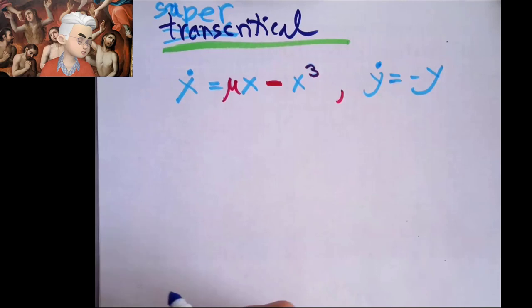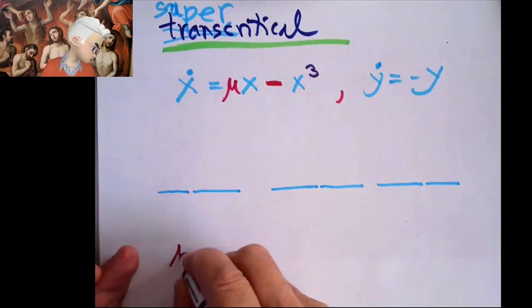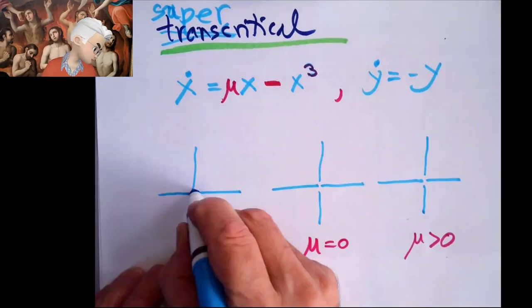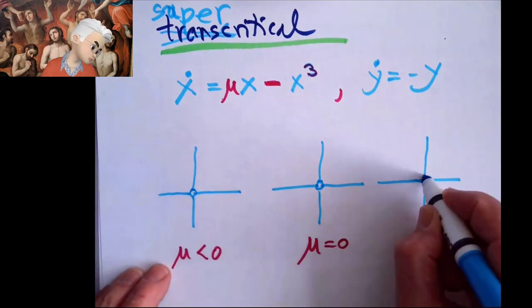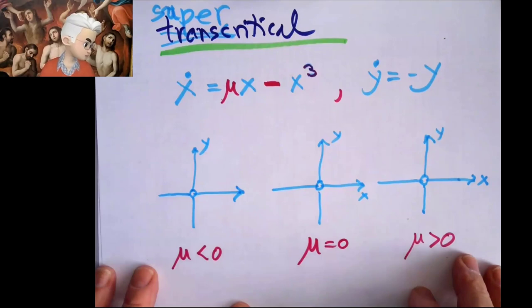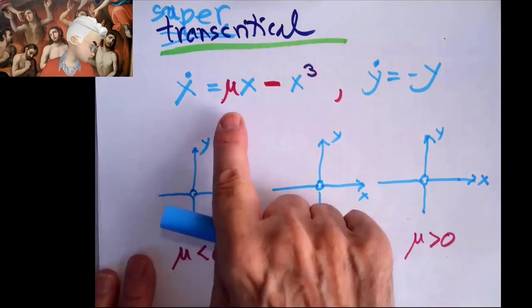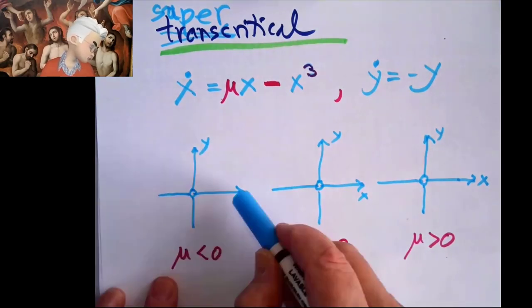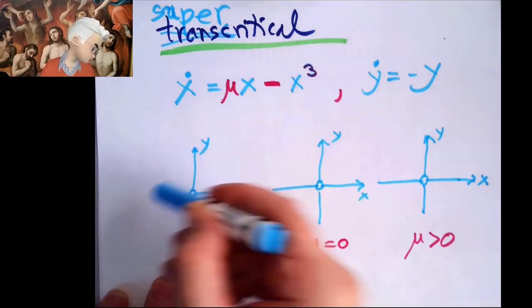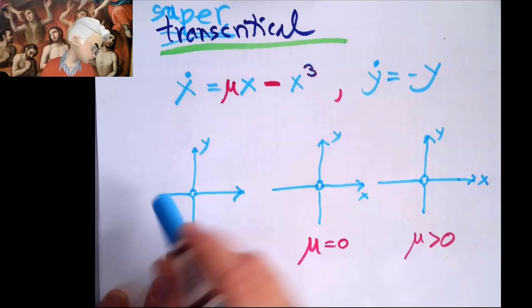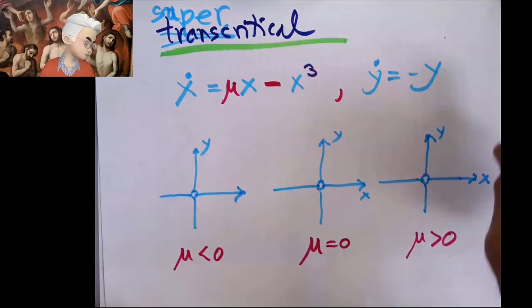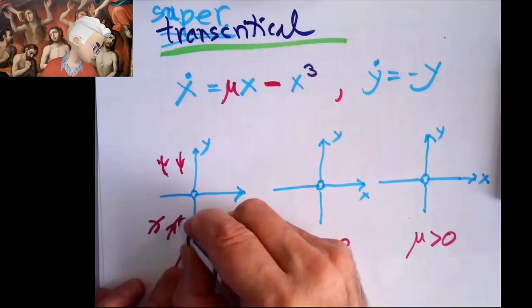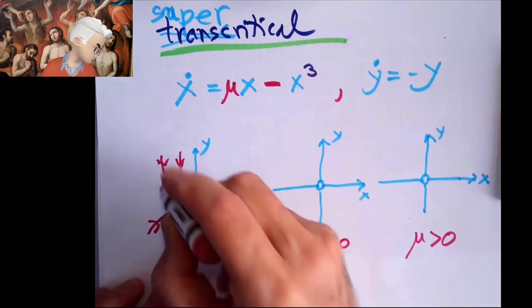And then we cheat, we just say y dot is minus 1. That means there'll be like three things, mu negative, mu zero, mu positive. But there's always fixed point at origin. When mu is negative, then this is negative and this is negative. So that means that x is flowing into this point, from the left hand side, it goes this way. And if x is negative, it goes that way.